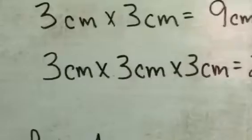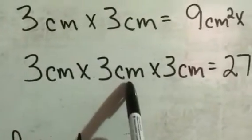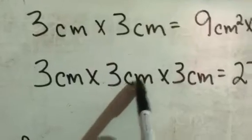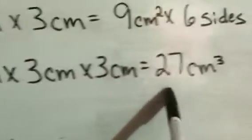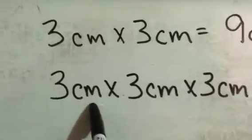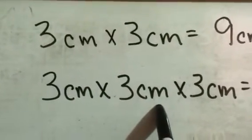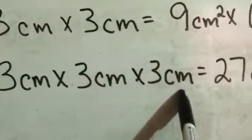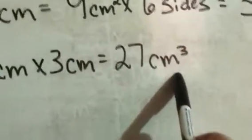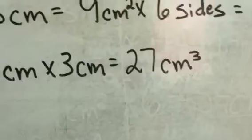So first, we do essentially the same thing. Three centimeters times three centimeters times three centimeters, so that's three times three, which is nine, times three, which is 27. Then we multiply the units. So you have centimeters times centimeters, so that's centimeters squared times another centimeter, so that's centimeters cubed. Now this is your volumetric measurement. This one's a little easier, you're done here.